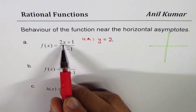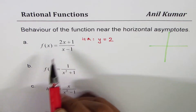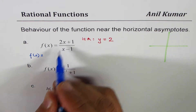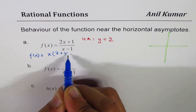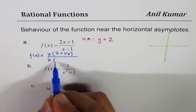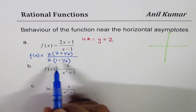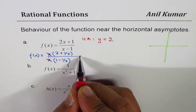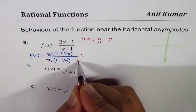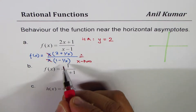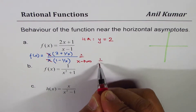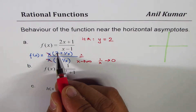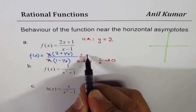There are many techniques of finding it. You can substitute a large value of x and you'll see that the function approaches 2. The other way is I could factor out x. So I could write f of x equals to — if I factor x, I get 2 plus 1 over x divided by 1 minus 1 over x. Now if x is very large, approaching infinity, then 1 over x is approaching 0, so we can neglect these terms. What we get is 2 over 1, and therefore we have a horizontal asymptote y equals to 2.